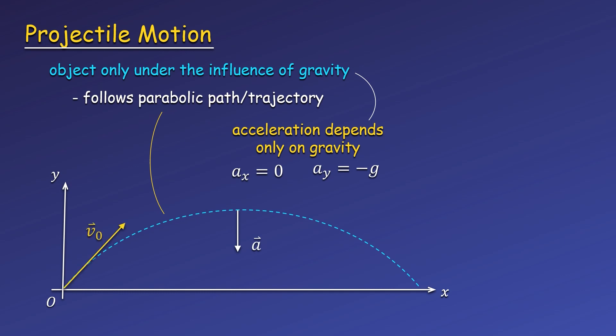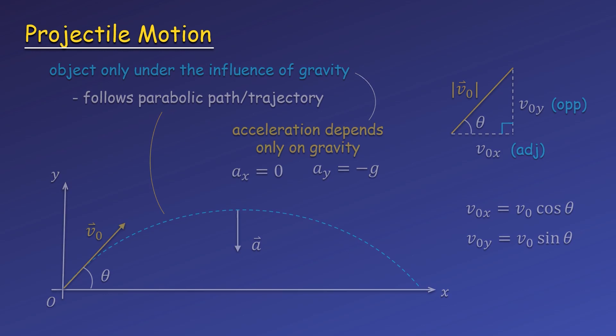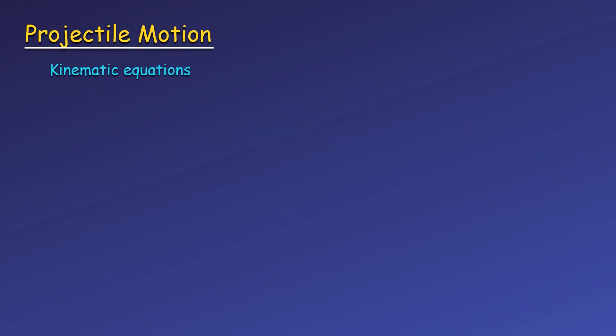If we draw an arrow representing the initial velocity when the object was launched, and the angle theta at which the object was launched above the ground or x axis, we can use this to draw a right triangle. From here, we can find the x and y components of our initial velocity. With the angle relative to horizontal, the x component is given by multiplying by cosine, and the y component is given by using sine. Since the acceleration of gravity is constant near the surface of Earth, we can use our constant acceleration equations, or kinematic equations.